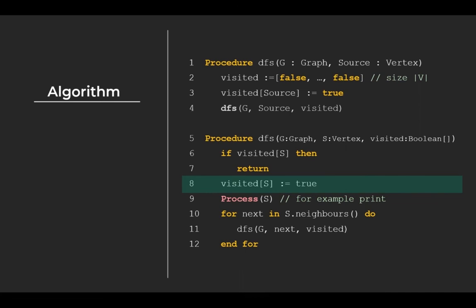If the node has not been visited before, then we can proceed. First, we mark it as visited. Then, we do whatever process we want to do during the graph traversal. It could be a simple print statement. Note that this statement could be located after the for loop. Or an additional processing step could be added after the for loop.